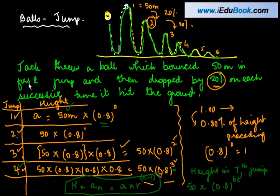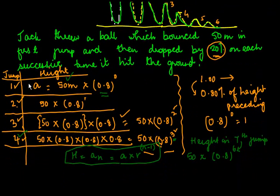Or we can simply write that the height or a_n is equal to a, which is the first term or the height, into r, which is the common ratio or 0.8 in this case, to the power n minus 1. And this gives us the formula which we will be using very often for the n-th term of a geometric progression: a r to the power n minus 1.